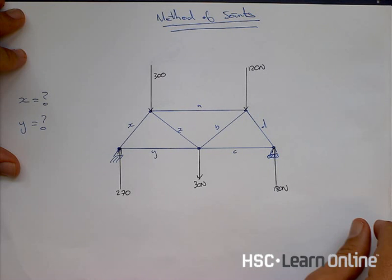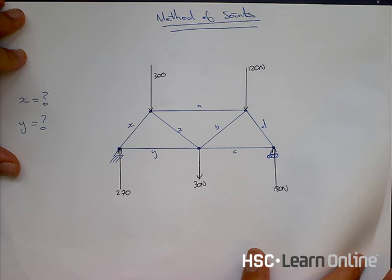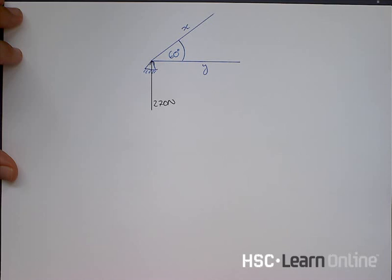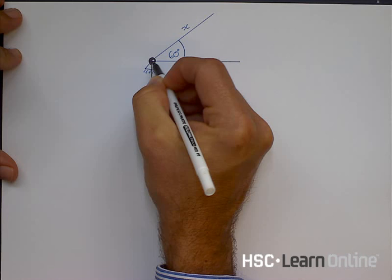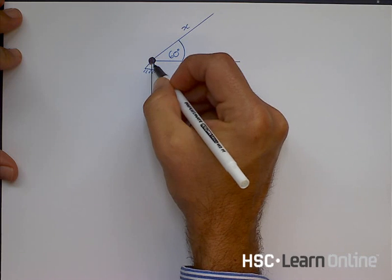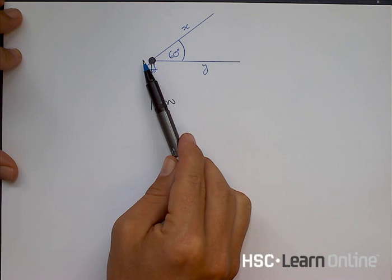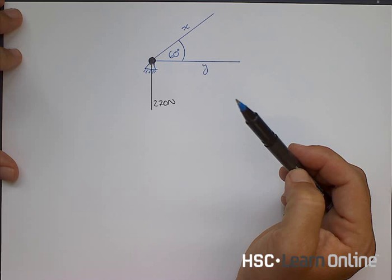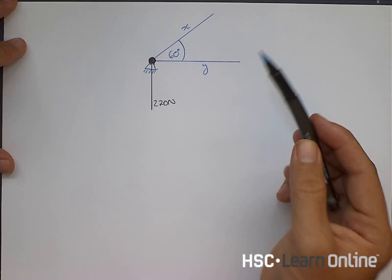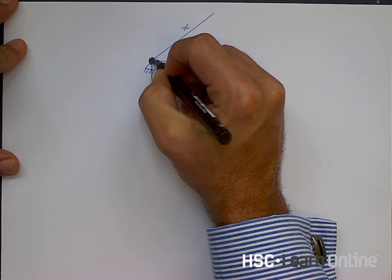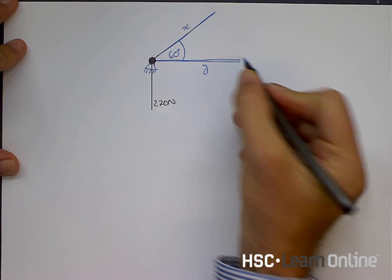Instead of looking at the whole bridge to find X and Y, I simply look at that one joint. Zoomed in, here is the joint: there's a 270 Newton force from the problem, member X, member Y, and a 60 degree angle. The problem becomes much simpler — we know there's a force acting along each member.